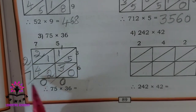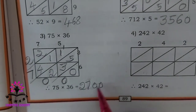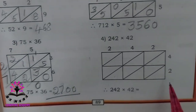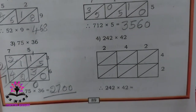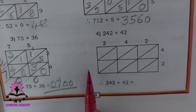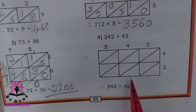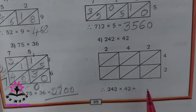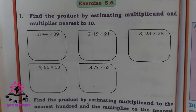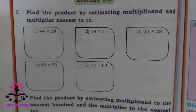So 75 into 36 equals 2700. The last problem you have to solve by yourself using the same lattice method. Now let us move on to the next exercise, Exercise 5.6, number 1: find the product by estimating the multiplicand and multiplier to the nearest 10.